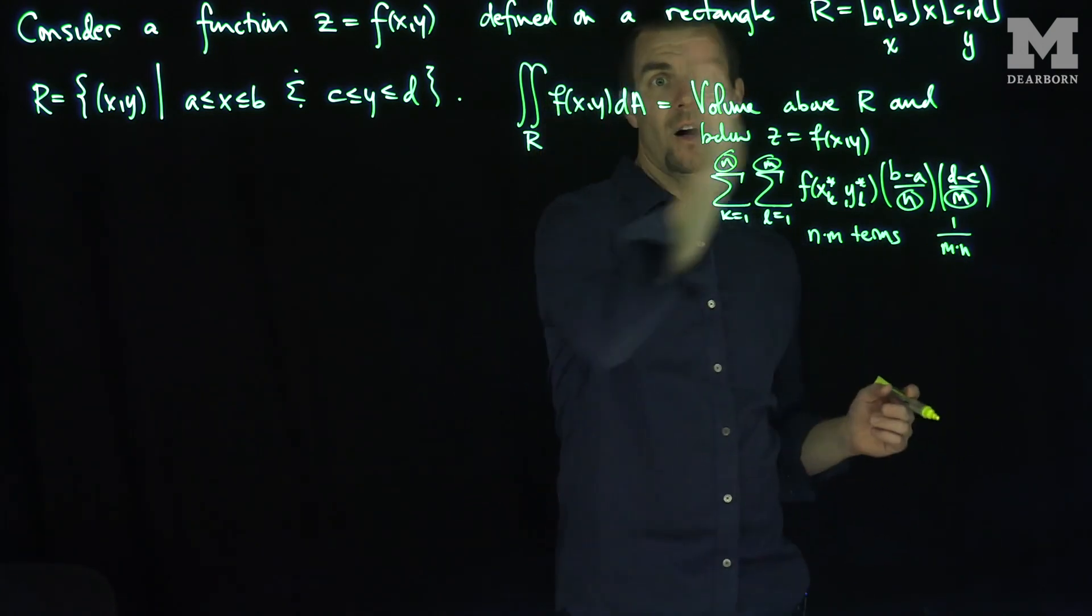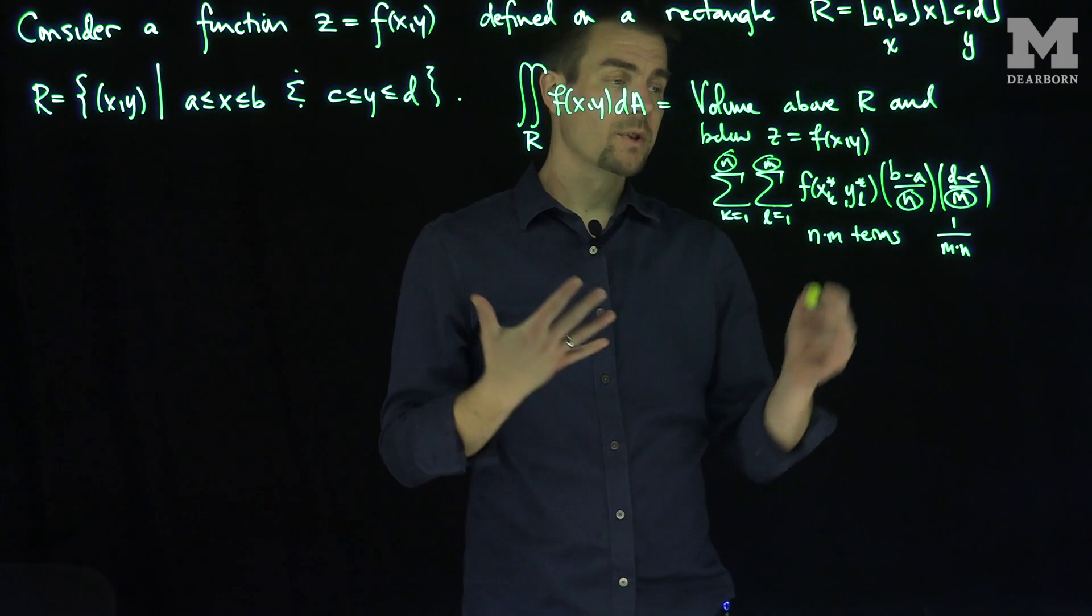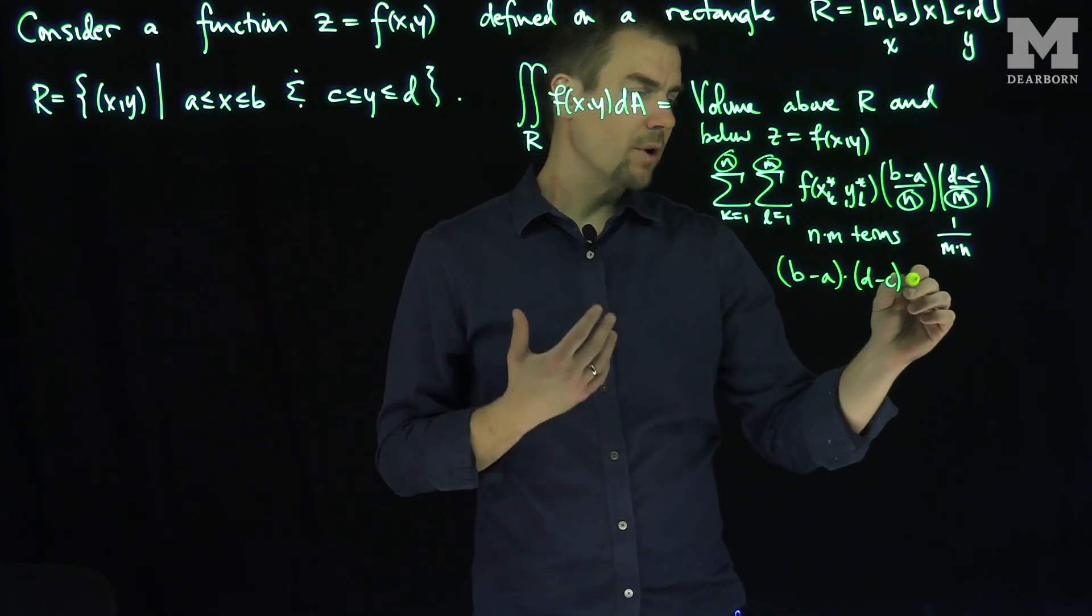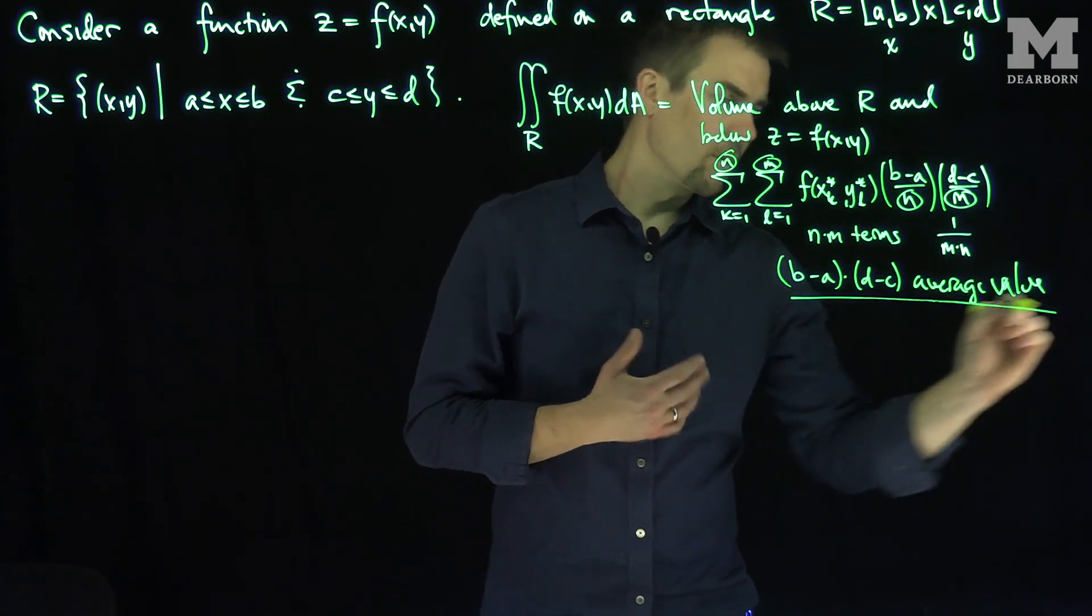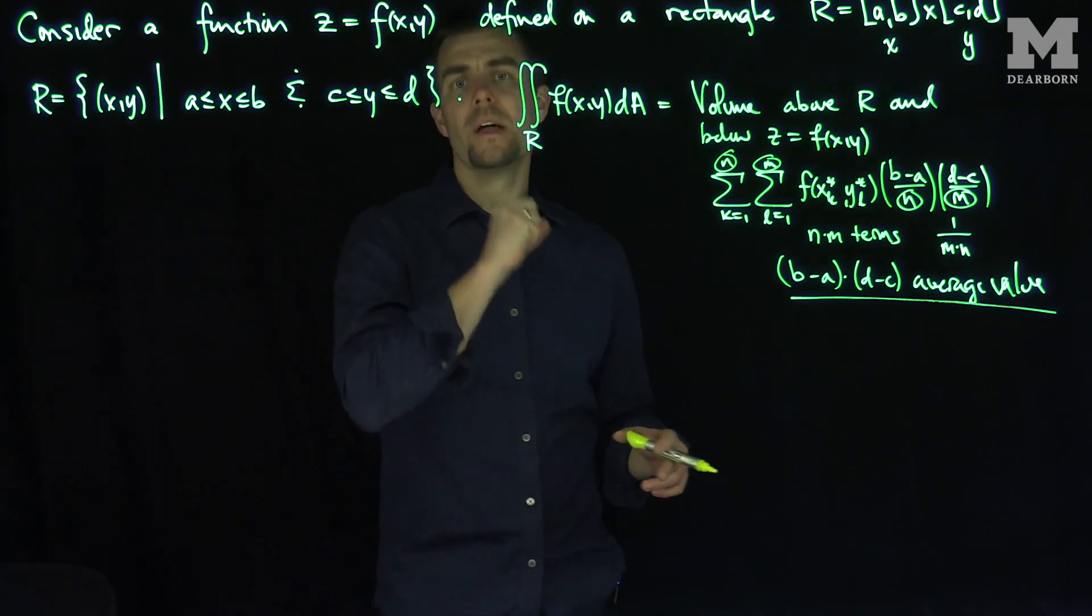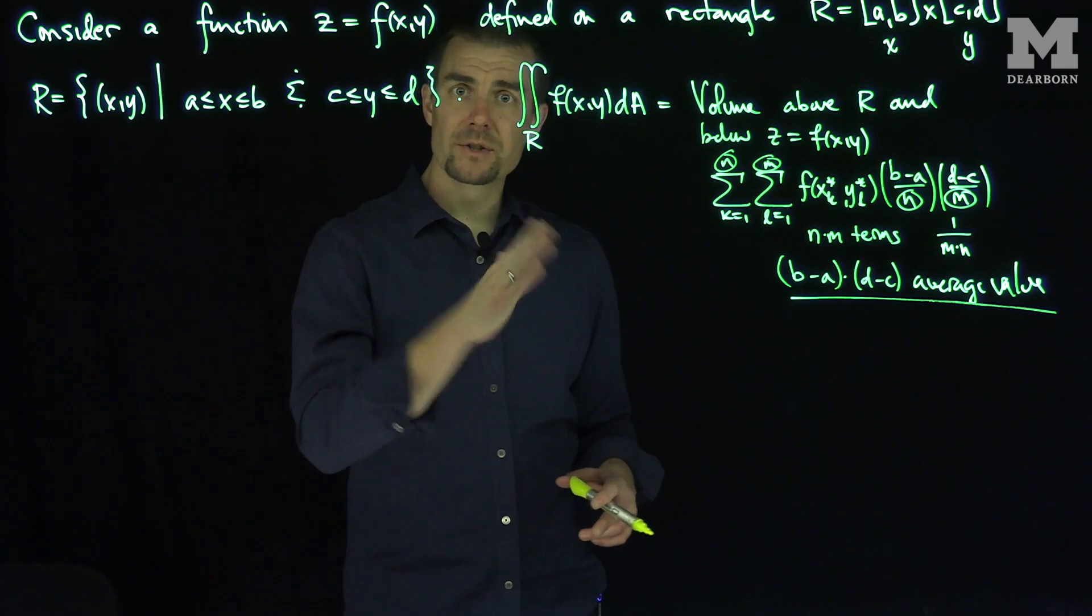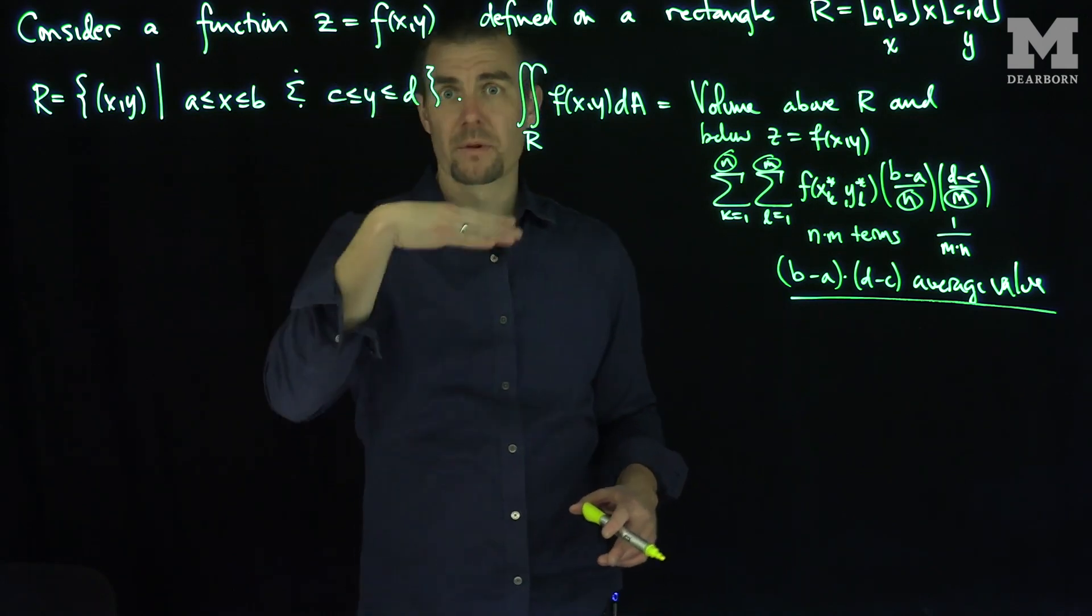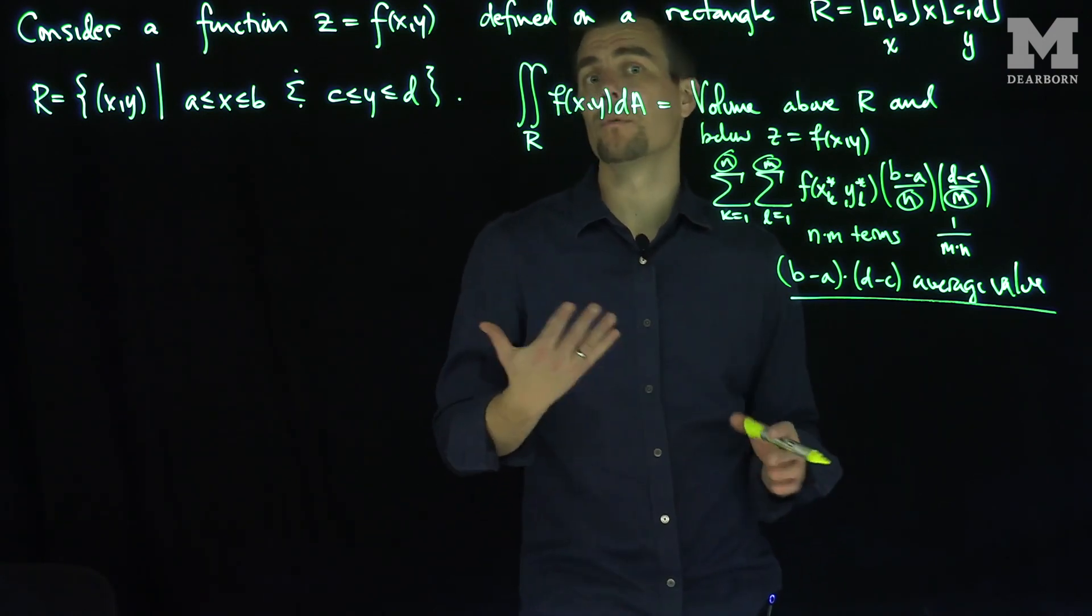So I have a sum of m times n terms divided by n times m, so what this represents is (b minus a) times (d minus c) times an approximate average value. And so, what we'll use in the future is we'll use the context that this really represents an average value up to a scalar multiple of the function. Now, of course, when we go to an infinite region, things get more complicated, but we want to keep this interpretation in the back of our mind because in higher dimensions, when I have w equal to a function of x, y, and z, then there's no notion of volume anymore. We have notions of hyper-volume, but even though hyper-volume might not make geometric sense, we have a notion of average value, which always makes sense no matter how many independent variables you have in your problem.